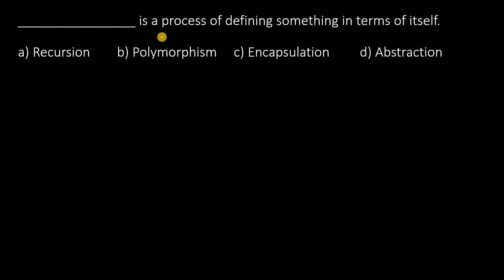Dash is a process of defining something in terms of itself. Direct question — the answer is recursion. Defining something in terms of itself means a method calling itself, which is called recursion.